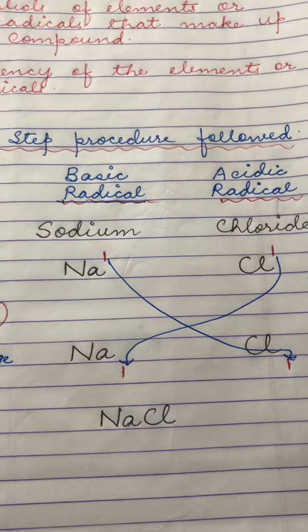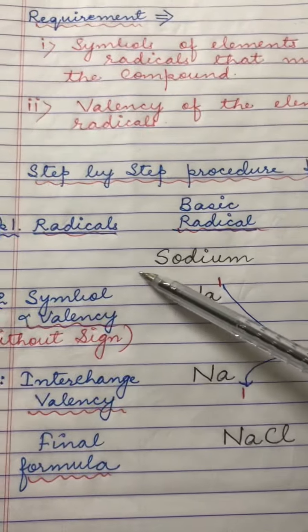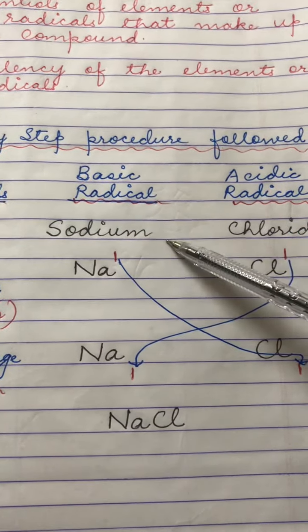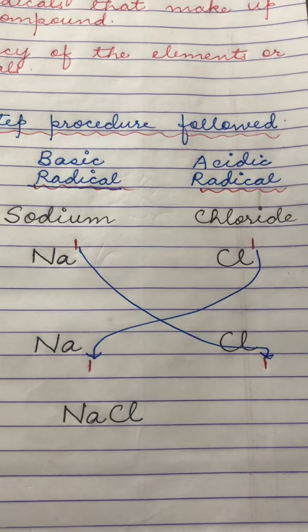Sodium chloride has two radicals. Basic radical is sodium and the acidic radical is chloride radical.